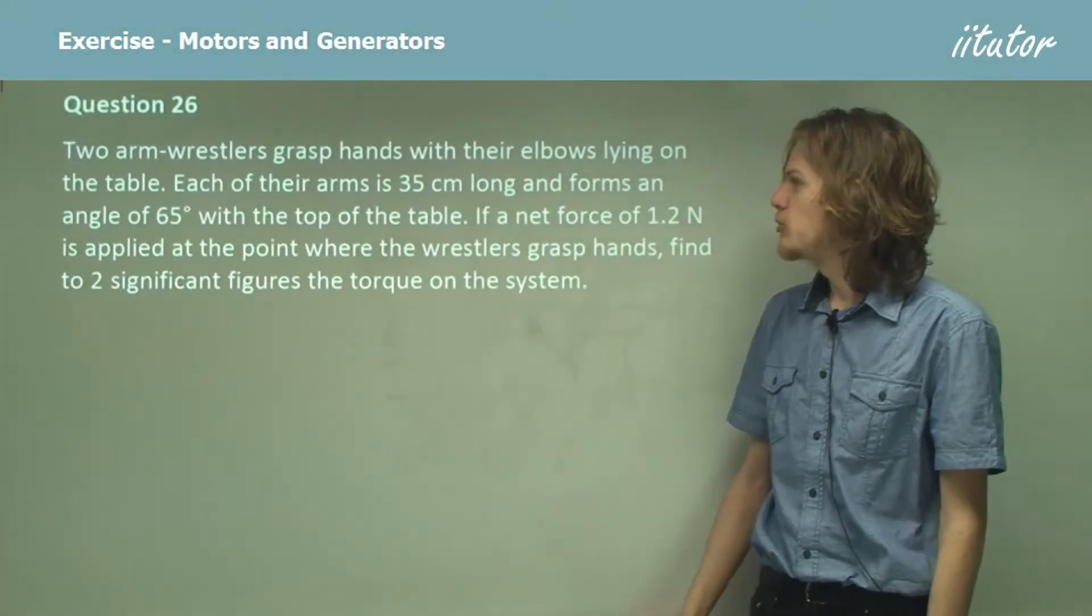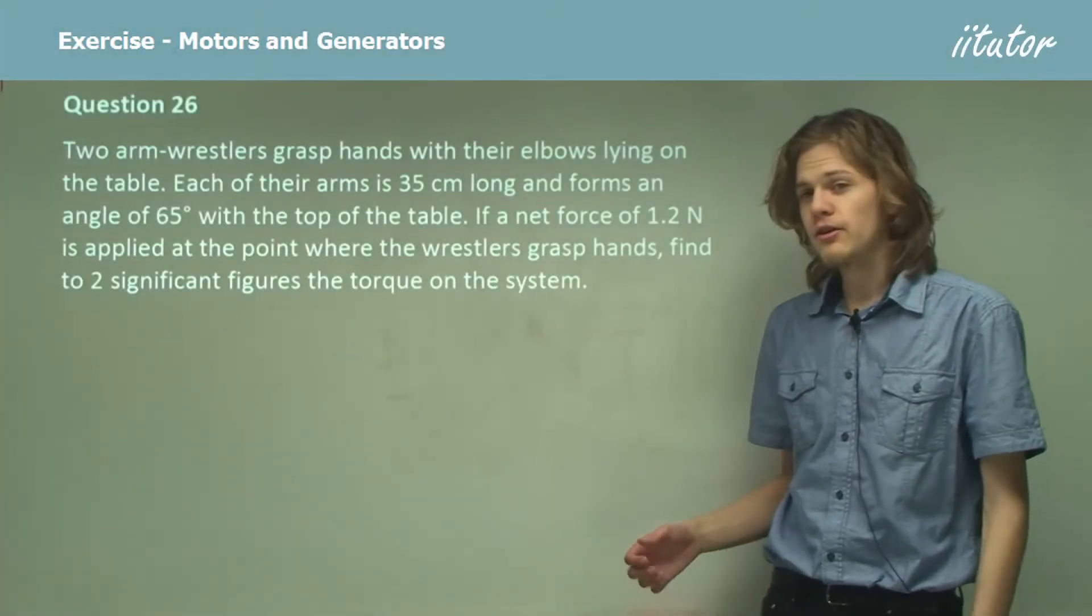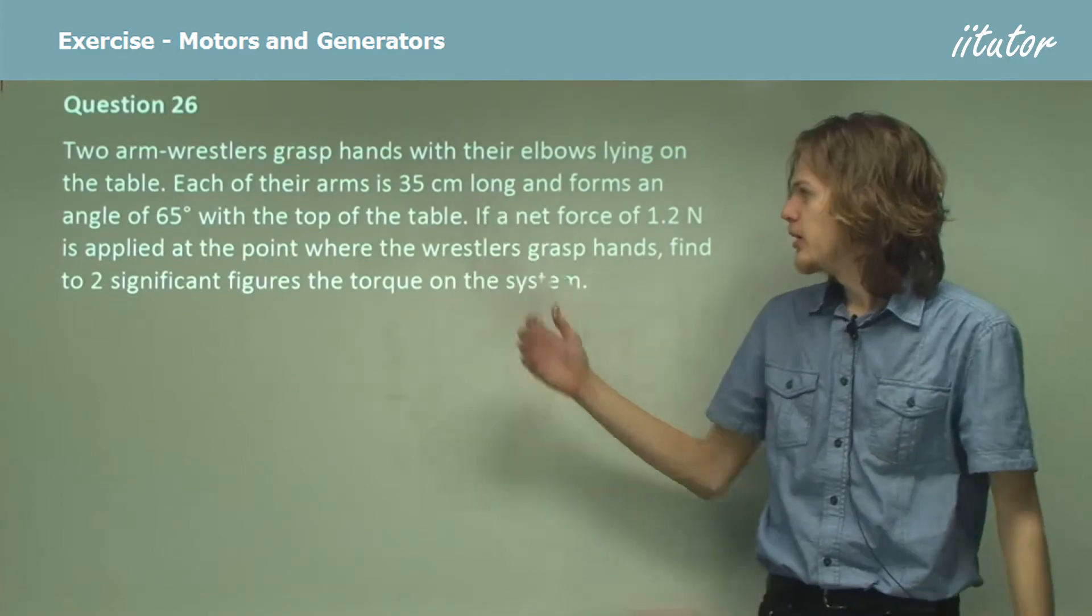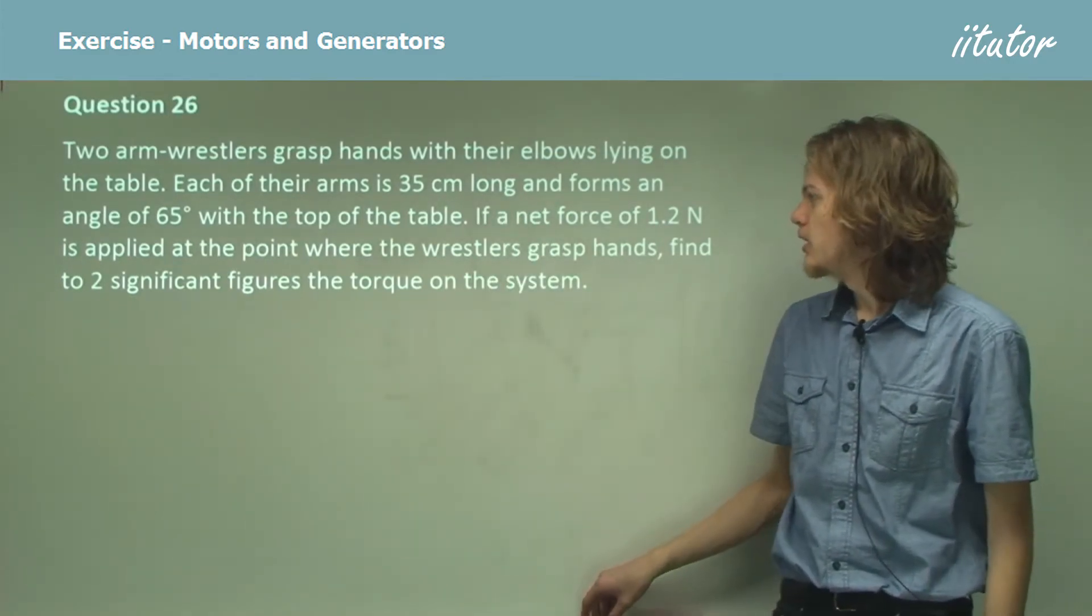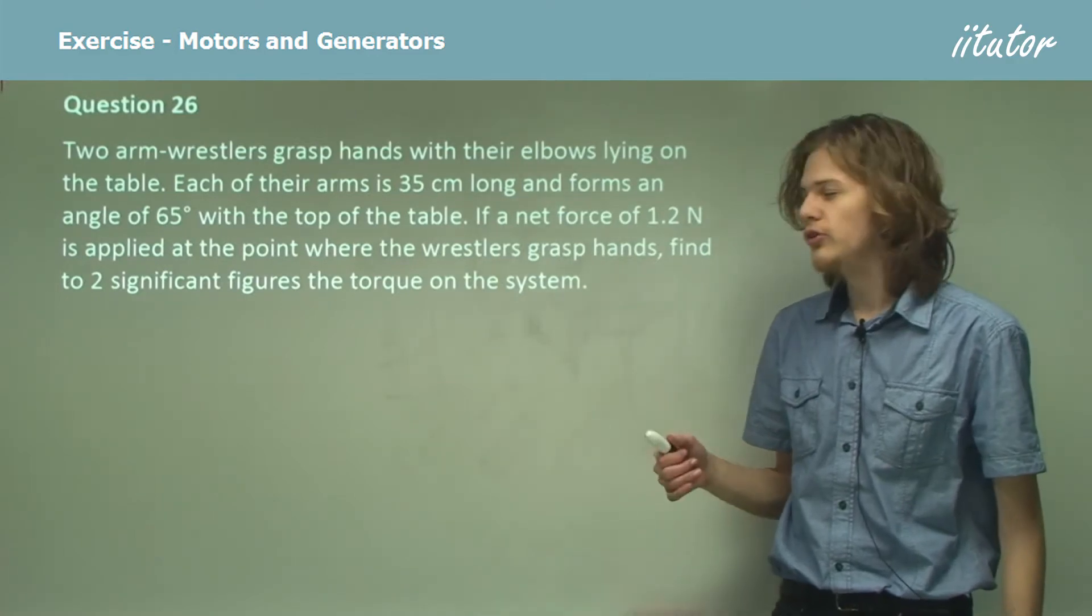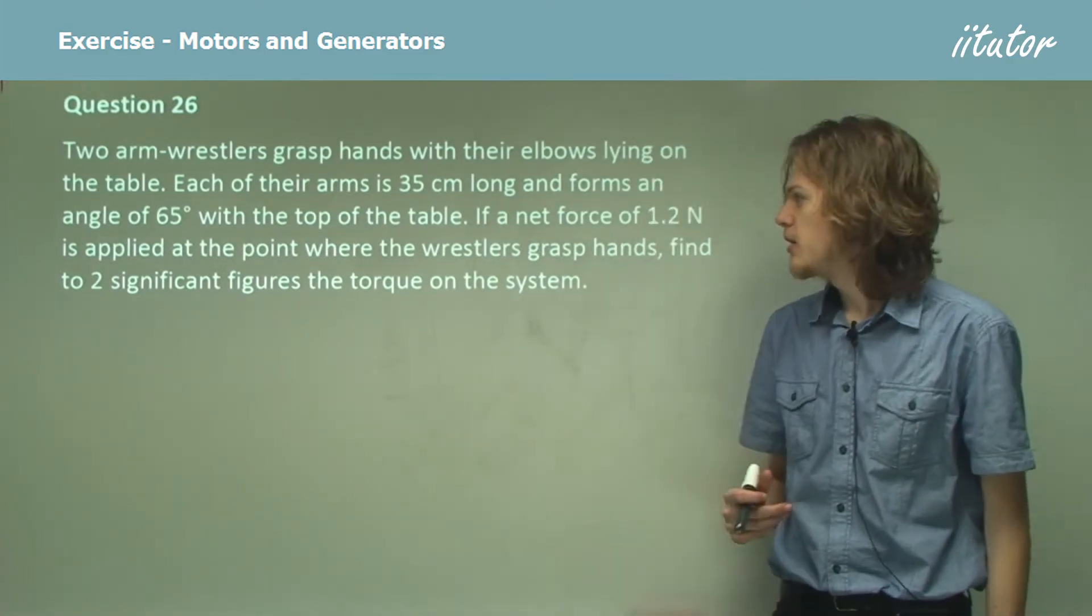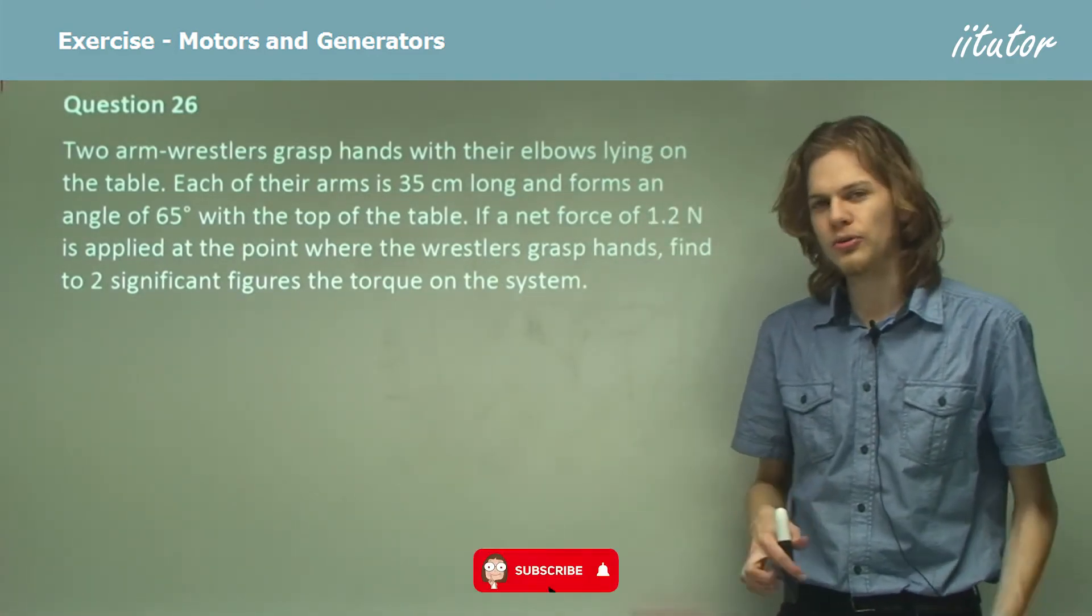Two arm wrestlers grasp hands with their elbows lying on the table. Each of their arms is 35 centimeters long and forms an angle of 65 degrees with the top of the table. If a net force of 1.2 Newtons is applied to the point where they're grasping hands, find the torque on the system.